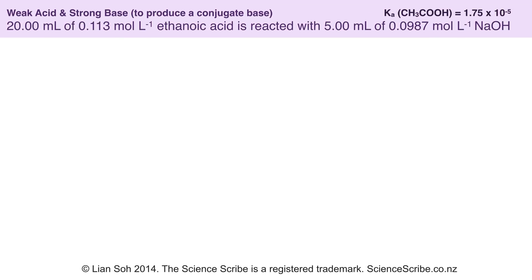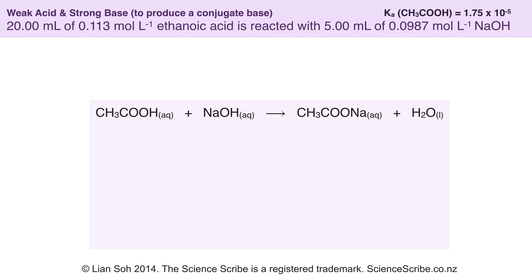In example number two, we start with a solution of ethanoic acid — 20 mL of 0.113 moles per litre — and then we add 5 mL of sodium hydroxide at 0.0987 moles per litre. We get a reaction between the ethanoic acid and sodium hydroxide that makes water and, importantly, sodium ethanoate. Those ethanoate ions are the conjugate base of ethanoic acid, giving us a mixture of a weak acid and its conjugate base — exactly what a buffer solution contains.